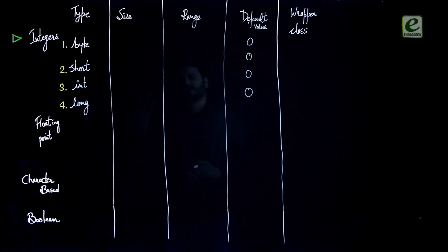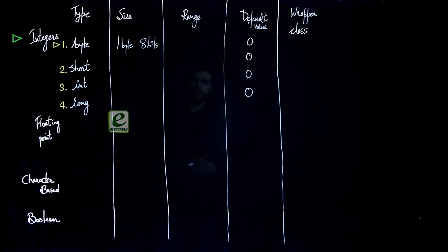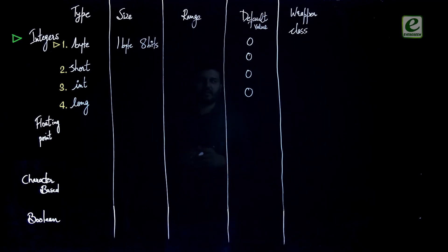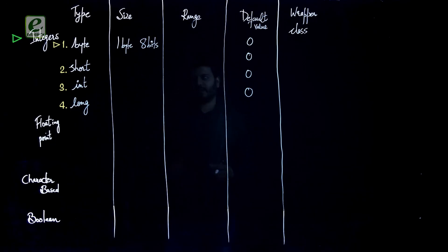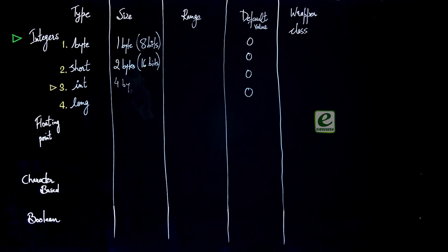Byte is of one byte, or you can say 8 bits. As you know, one byte consists of 8 different bits. Short is of 2 bytes and 16 bits. Int is of 4 bytes — very important and widely used — or 32 bits.